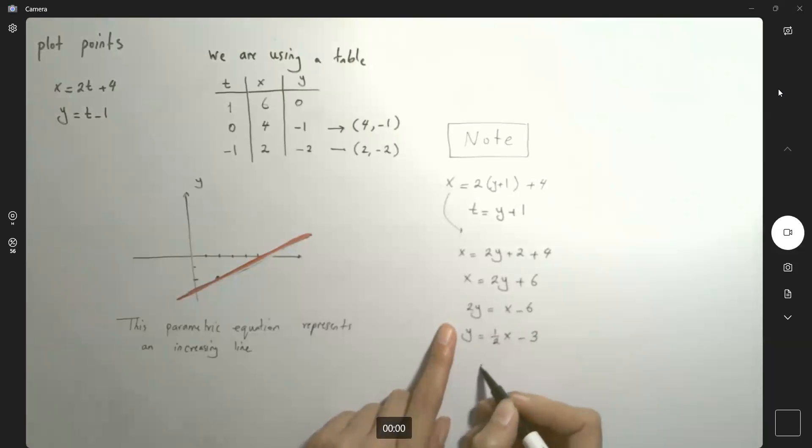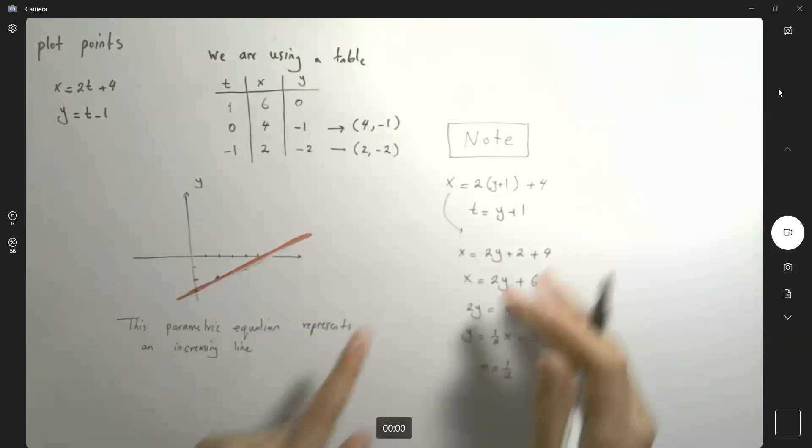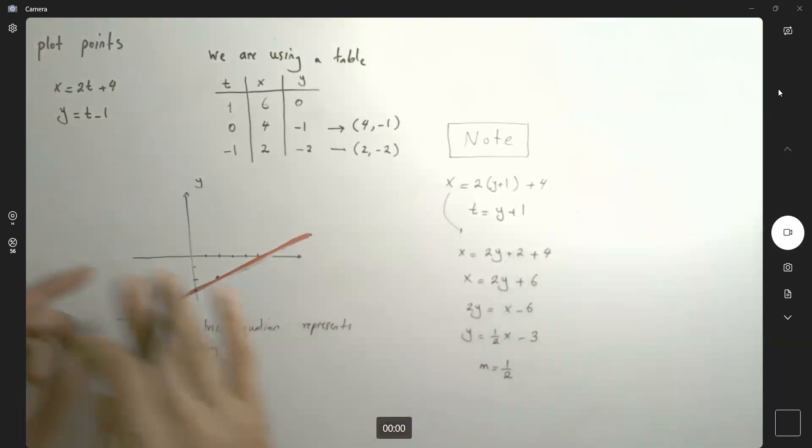So basically you have an increasing line. 2y is x minus 6, or y is a half x minus 3. The slope of the line is a half and the y-intercept is negative 3. So either showing the algebra or using t to graph what you have here.